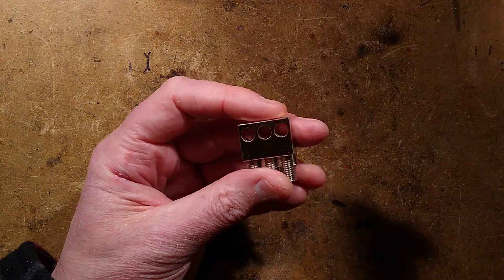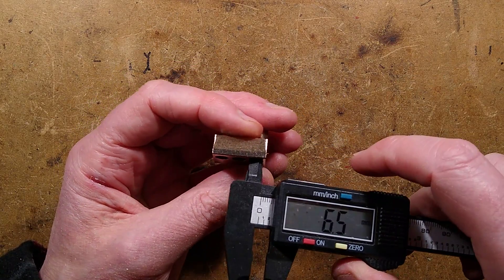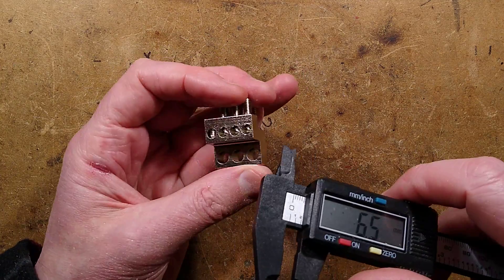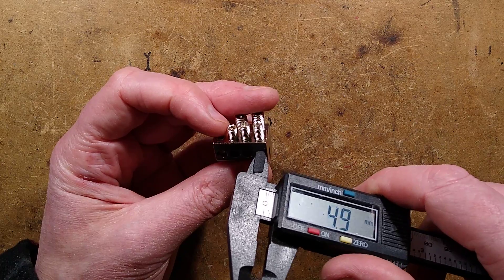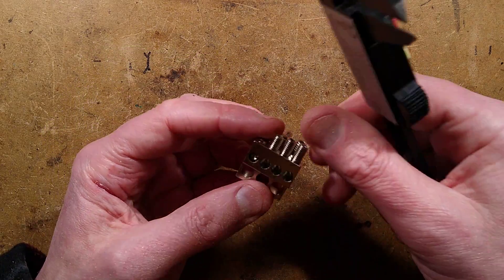These ports here, what size are they? Let's measure this. 6.5 millimeter. They go all the way through which is quite nice, but these ones don't go all the way through and they're about 4.8 millimeter in diameter. How deep are they?